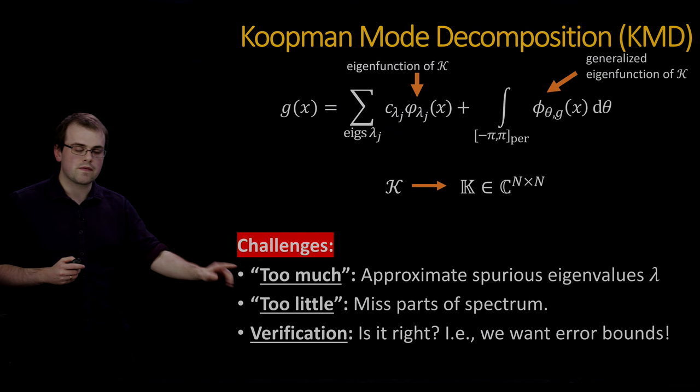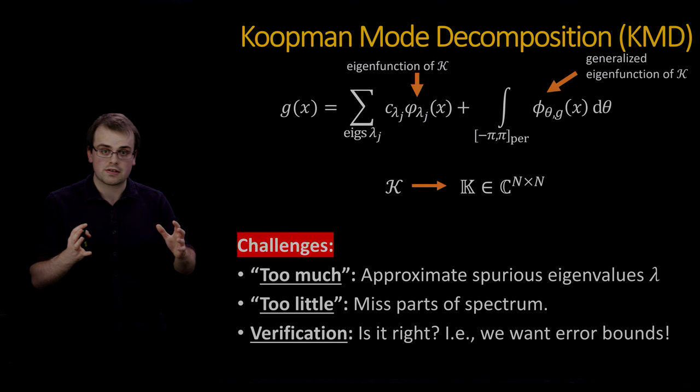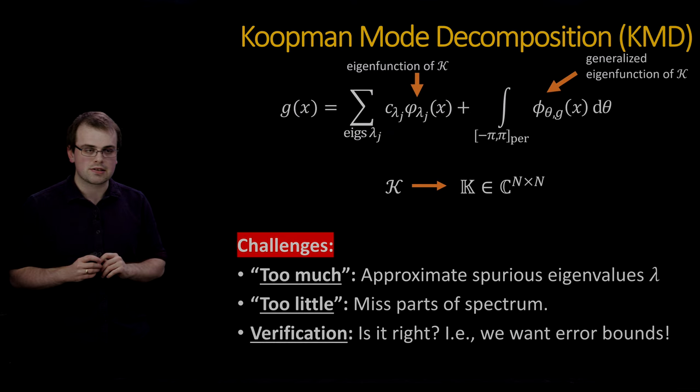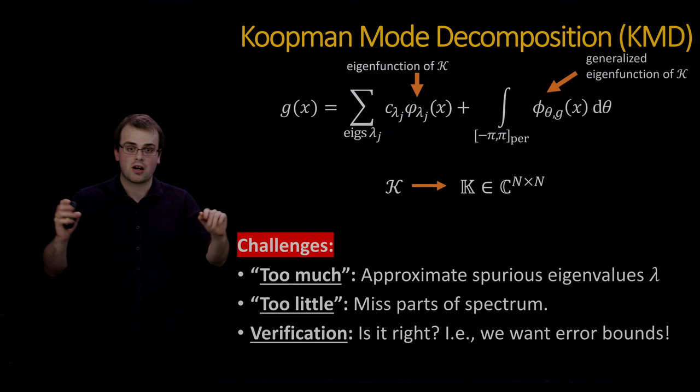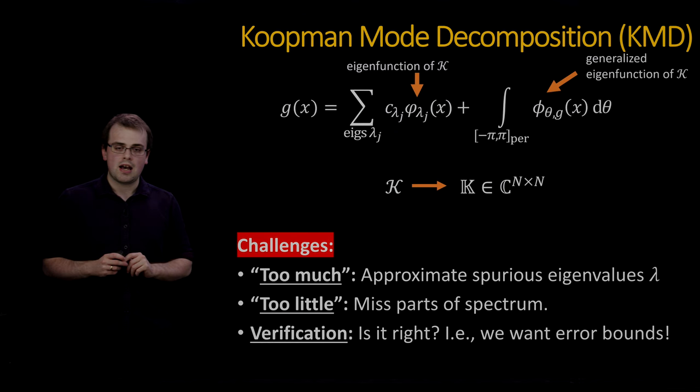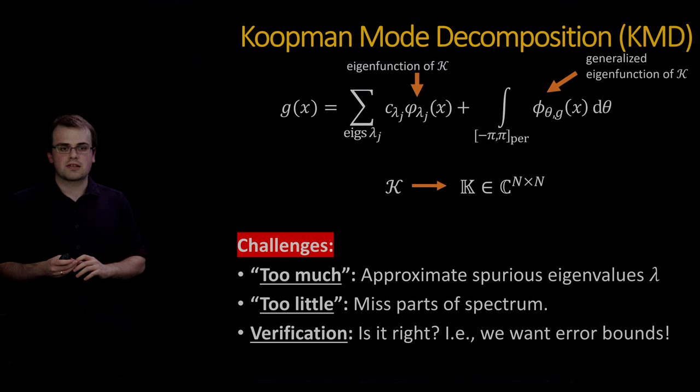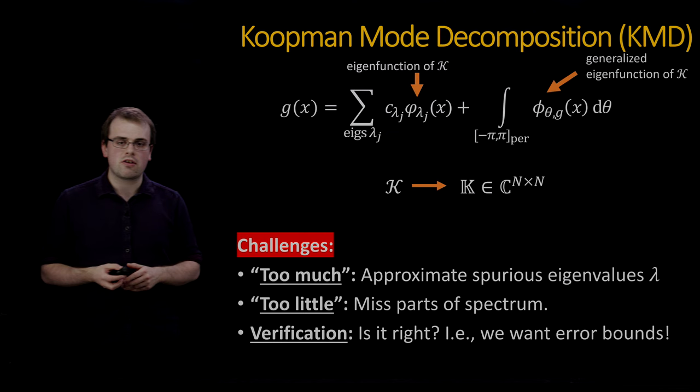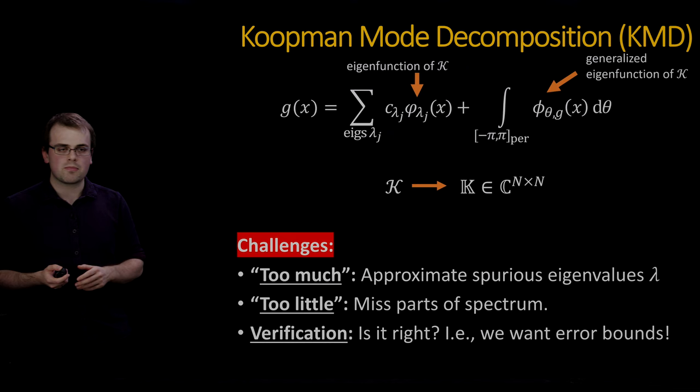You've got the Koopman operator and you truncate. If you do that and compute eigenvalues, you can run into all sorts of issues, three in particular. You can suffer from too much: there can be eigenvalues of that finite matrix that are spurious, that have nothing to do with the true infinite dimensional Koopman operator. You can also suffer from too little: you can completely miss parts of the spectrum, which means you miss potentially important dynamics. And then finally, verification: you want to ask the question, is it right? Can I trust the output? Can I do a computation which also comes with an error bound or an error guarantee?